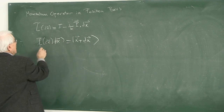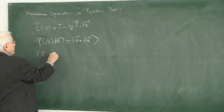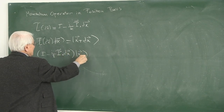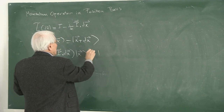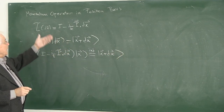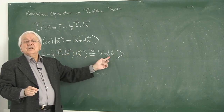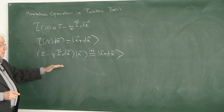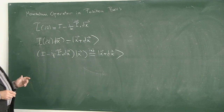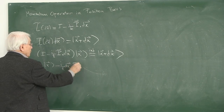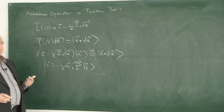We bring this in: the operator (1 minus i/ℏ p dx) acting on |x⟩ gives |x + dx⟩ for the infinitesimal case. If it were finite, we would have the exponential form, and the shift would still hold. But for the infinitesimal case, the left-hand side has this simple form. So the left-hand side is |x⟩ minus (i/ℏ) dx times the momentum operator on |x⟩ in the position eigenvector basis.